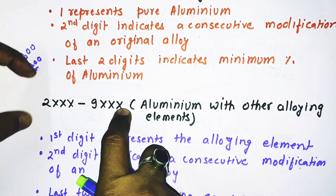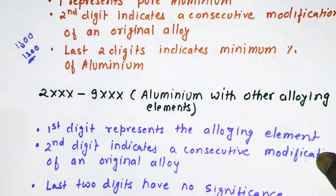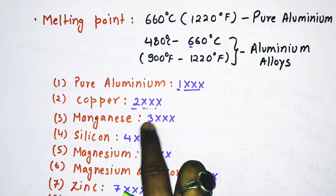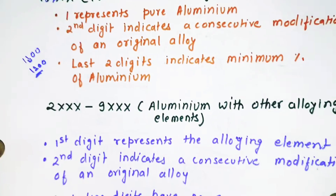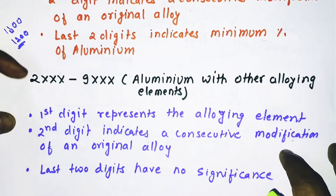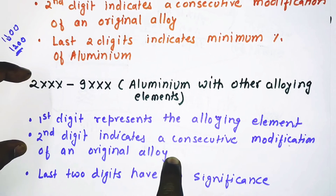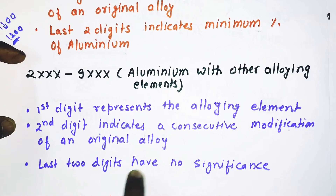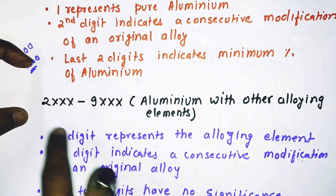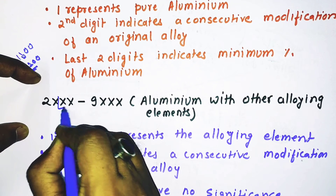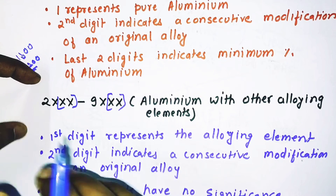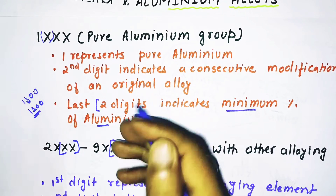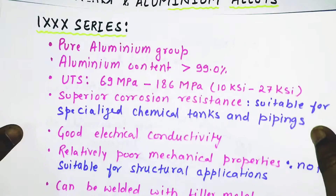For alloying element groups from 2xxx to 9xxx, the first digit represents the alloying element: 2 for copper, 3 for manganese, 4 for silicon, and so on. The second digit again indicates a consecutive modification of an original alloy. However, the last two digits have no significance for the 2xxx through 9xxx series — they are assigned arbitrarily. Only in the pure aluminum 1xxx group do the last two digits indicate the minimum aluminum percentage.